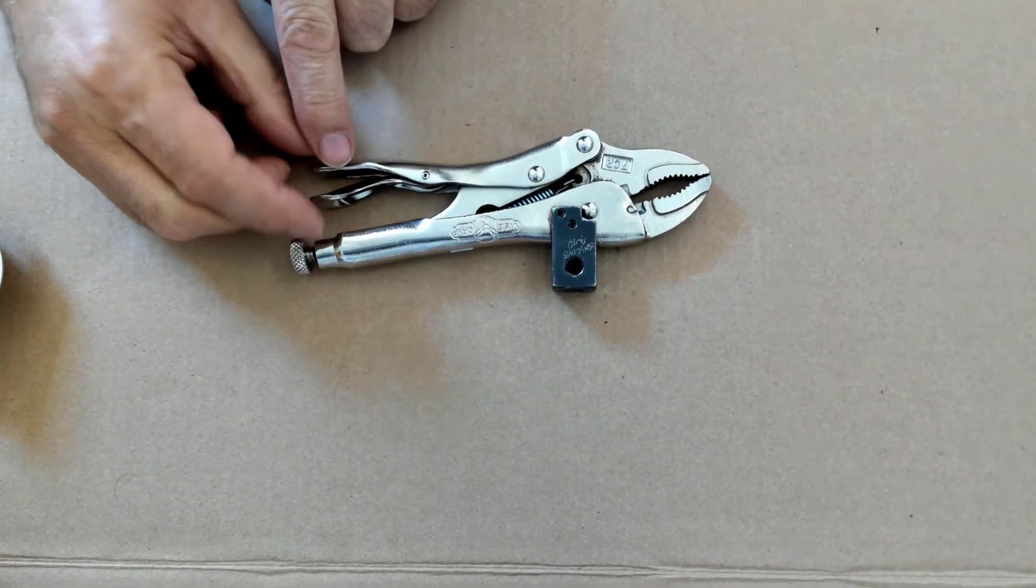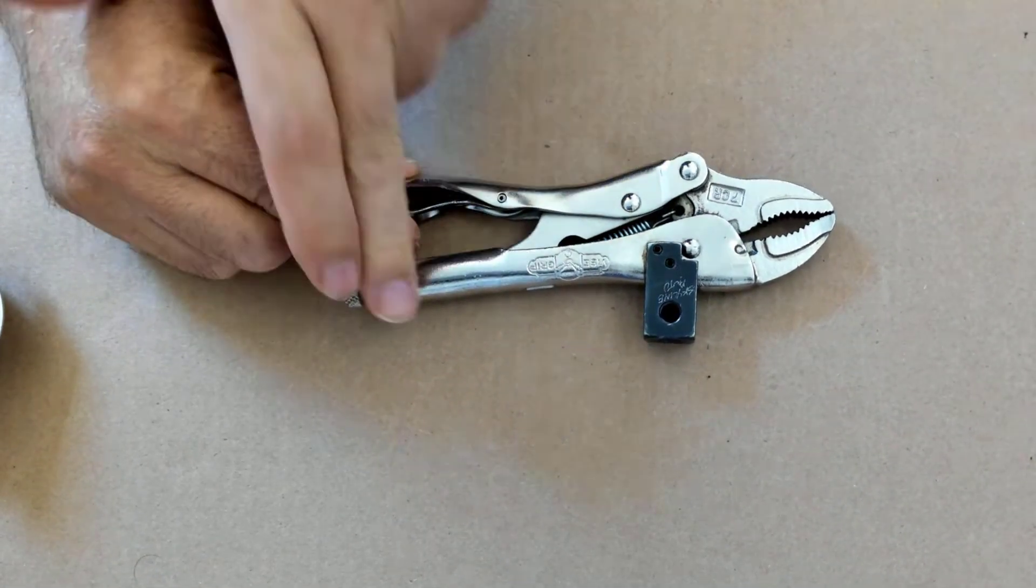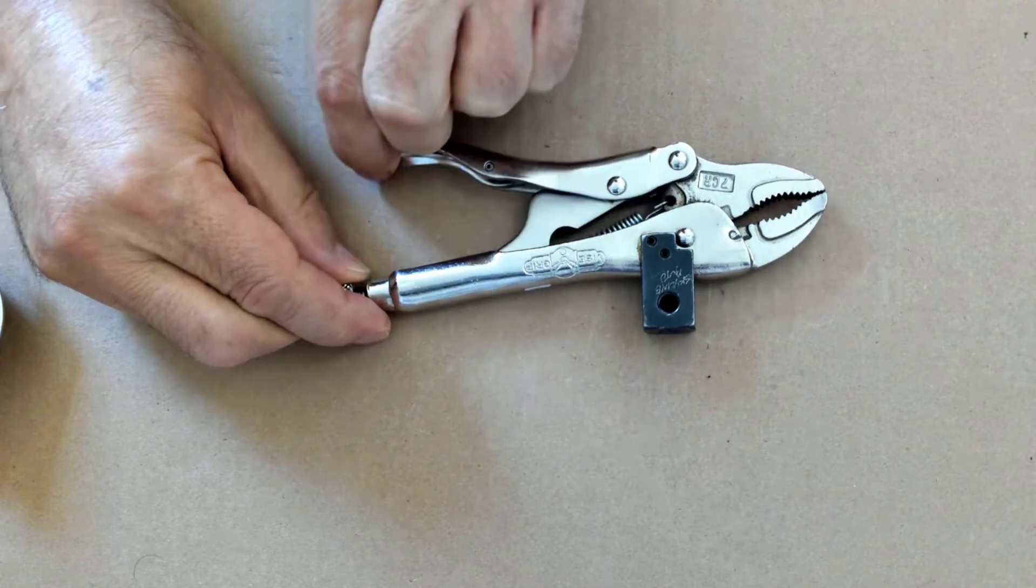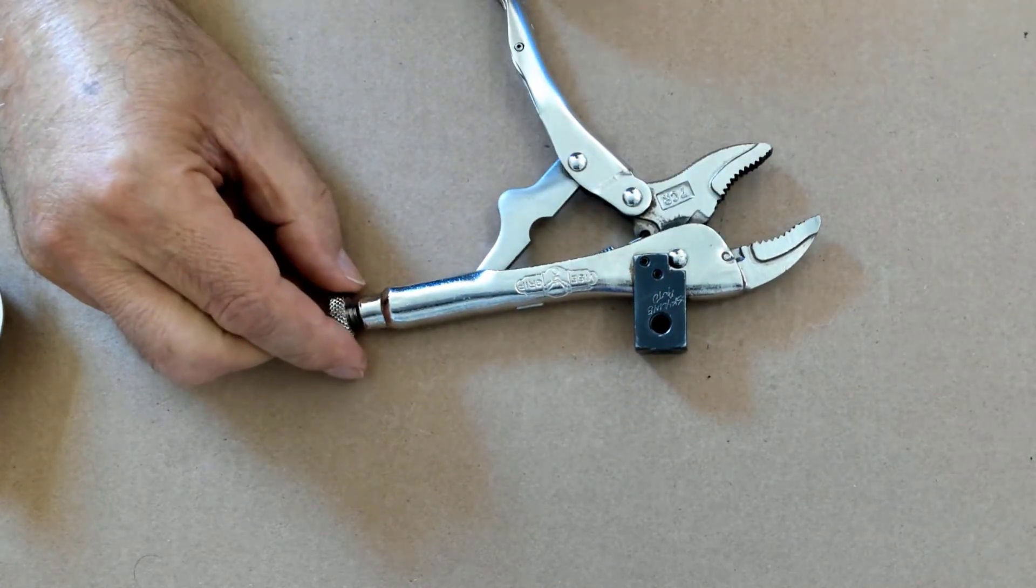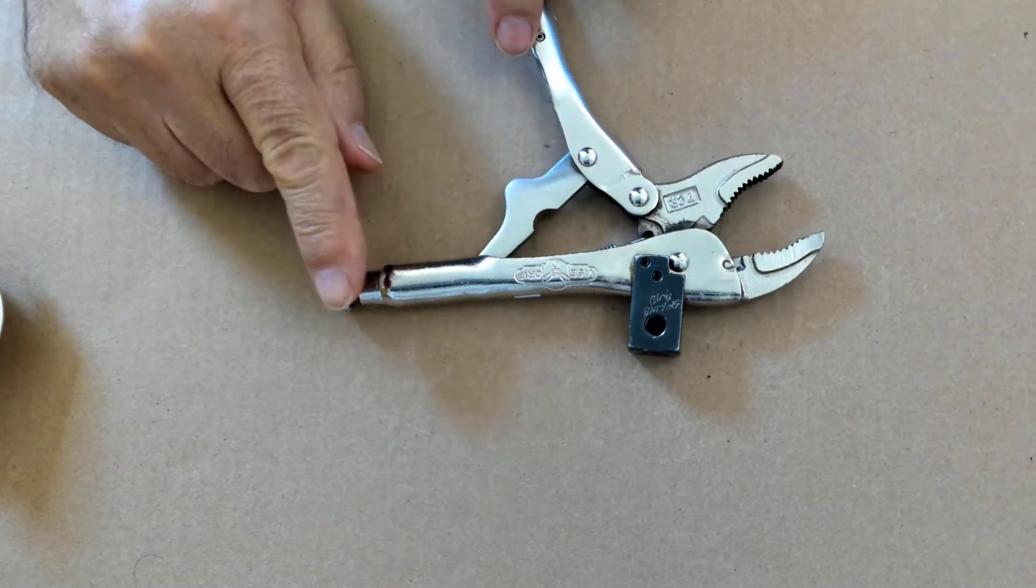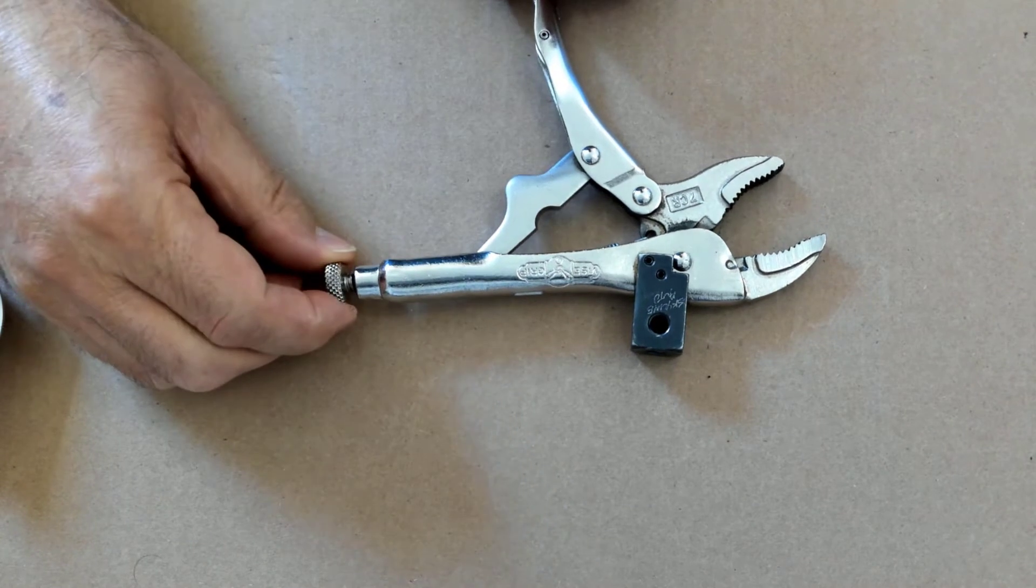Vise grip pliers are loosened by pushing this lever right here. Then the adjustment at the far end is the threaded screw.